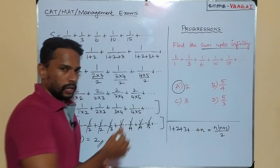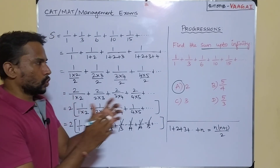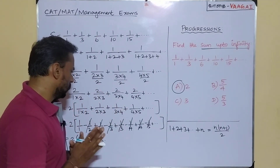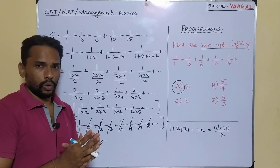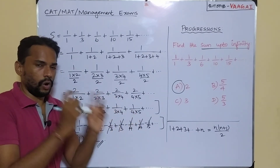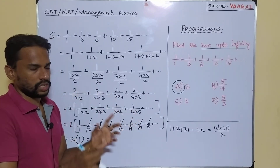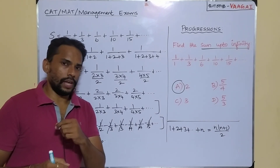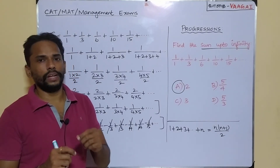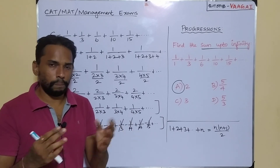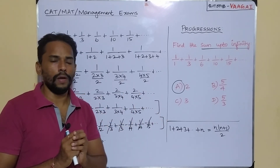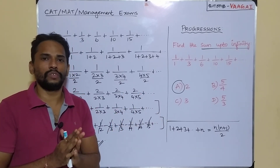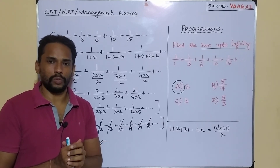The sum of the given series up to infinity is 2, which is option A. I hope you found this question interesting and the approach easy. If this session was useful, please give a like and share with your friends. See you in the next session!